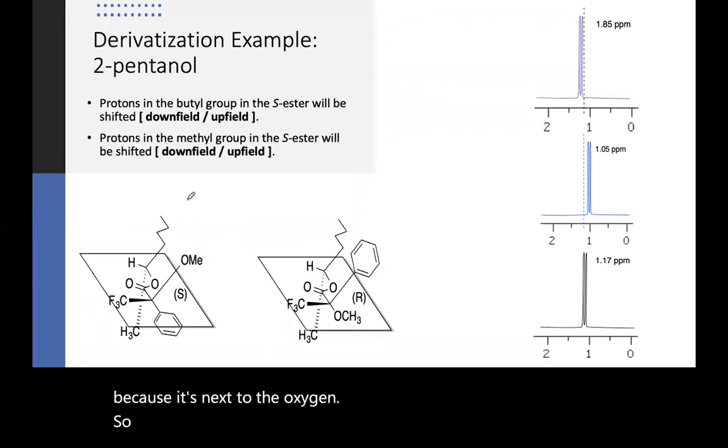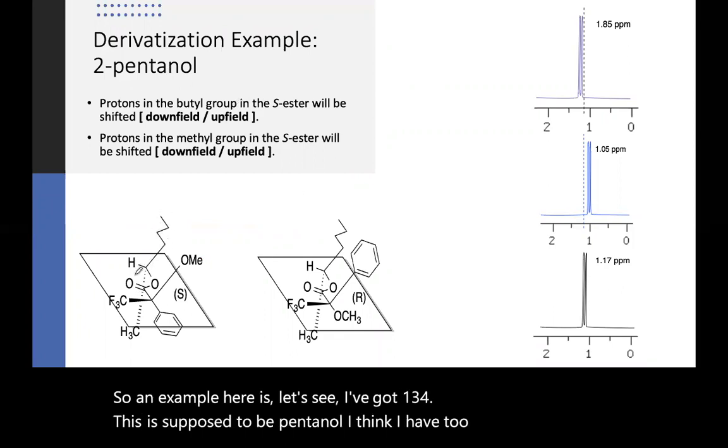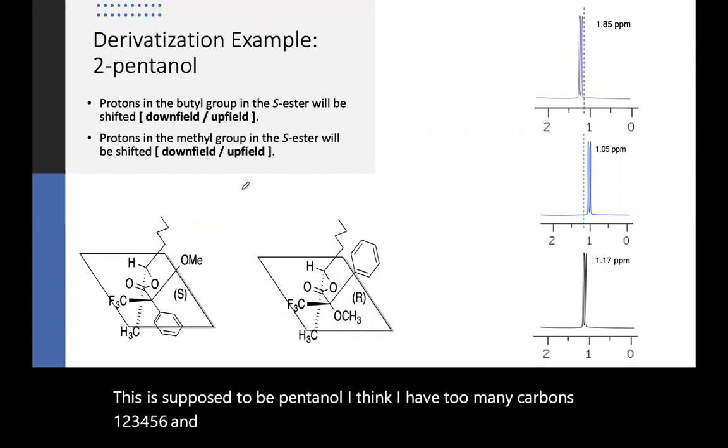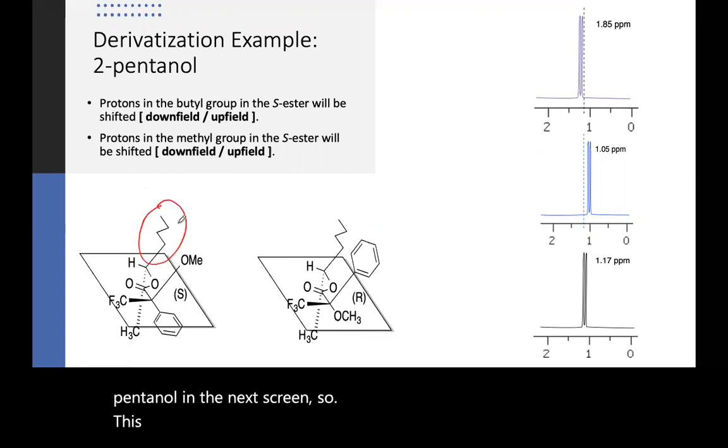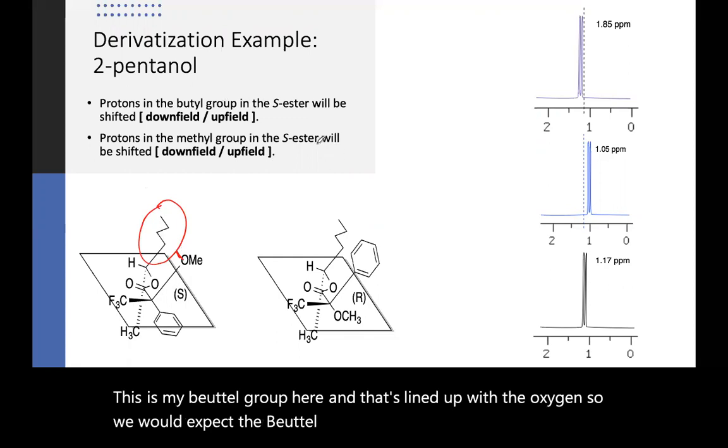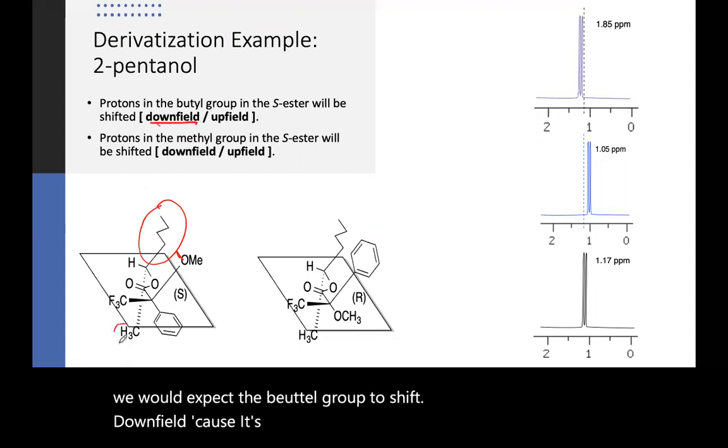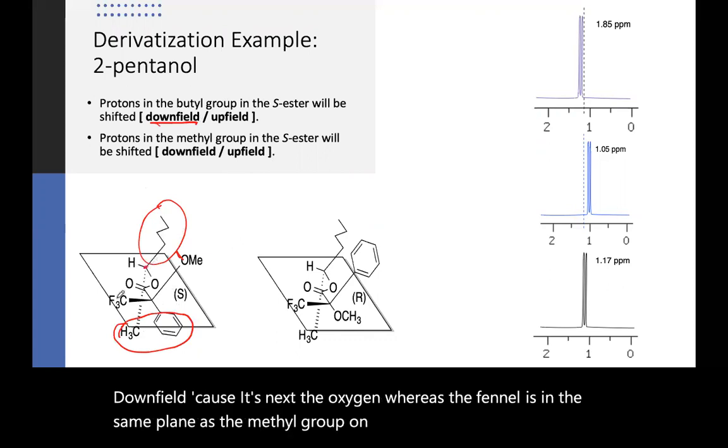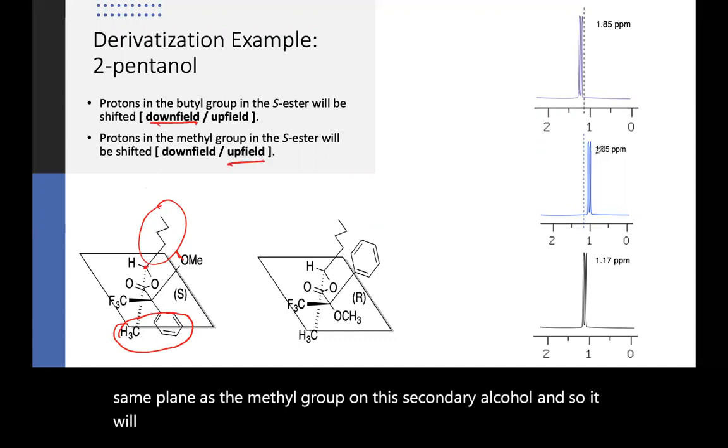So an example here is 2-pentanol or hexanol. This is my butyl group here and that's lined up with the oxygen. So we would expect the butyl group to shift downfield because it's next to the oxygen. Whereas the phenyl is in the same plane as the methyl group on this secondary alcohol. And so it will move upfield and we can take a look.